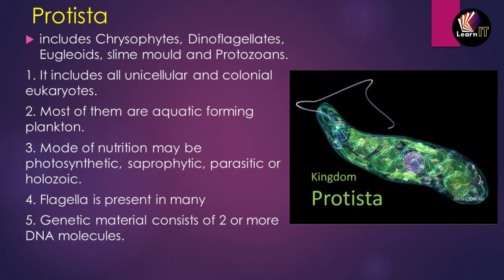Next is flagella. There is a diagram of Kingdom Protista showing a tail-like structure known as flagella. Flagella, if present, are 11-stranded with a 9+2 arrangement of microtubules composed of tubules. The genetic material consists of two or more DNA molecules.